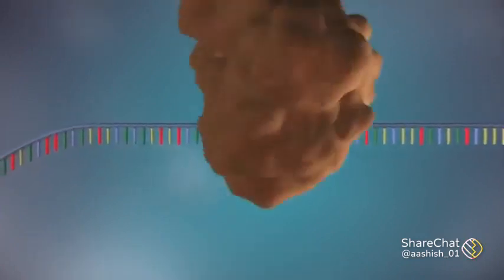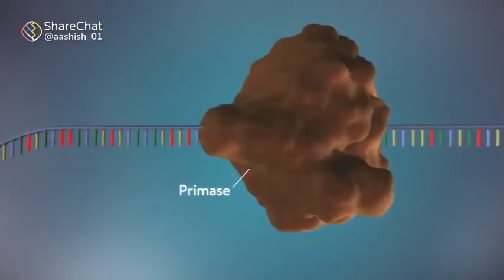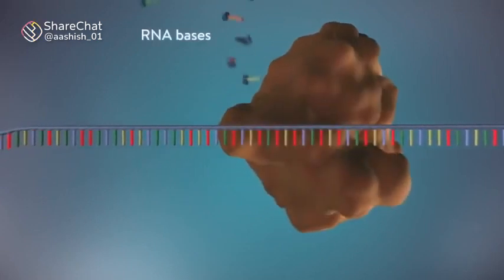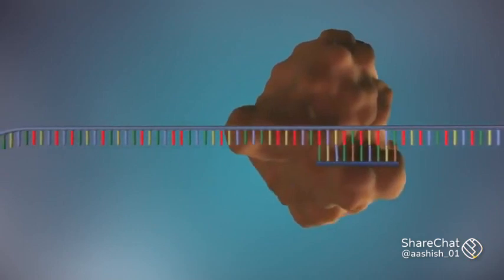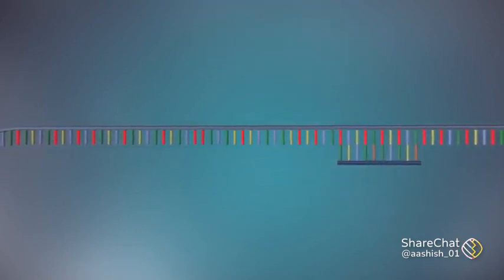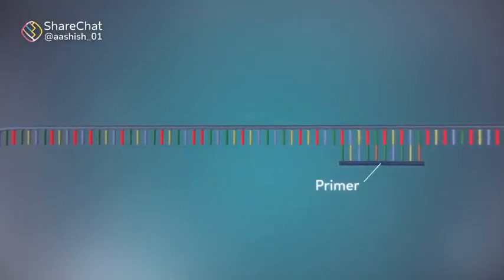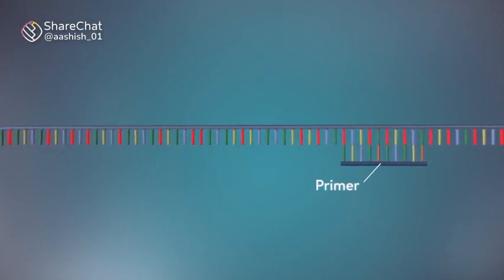An enzyme called primase starts the process. This enzyme makes a small piece of RNA called a primer. This marks the starting point for the construction of the new strand of DNA.